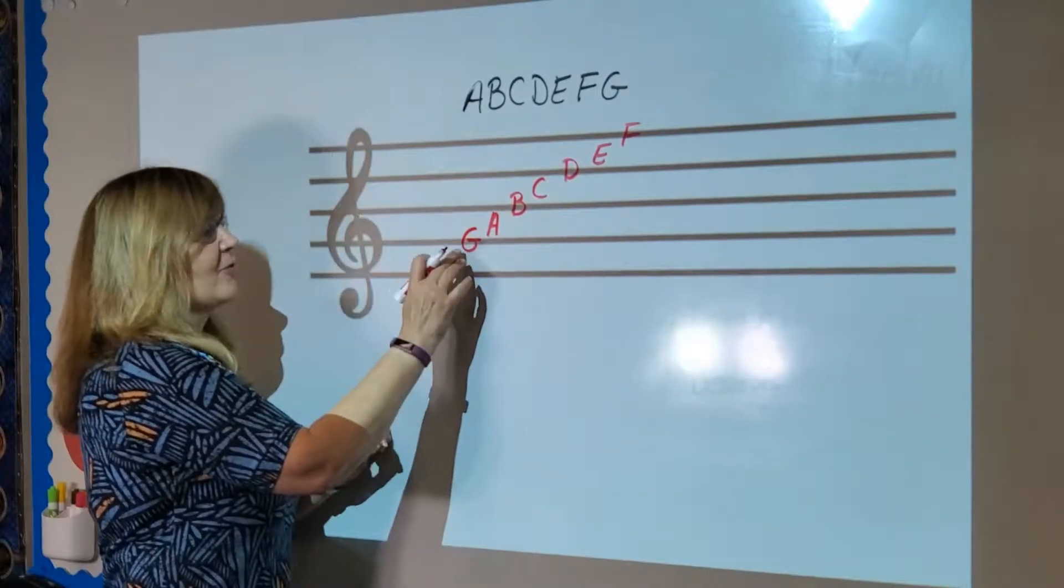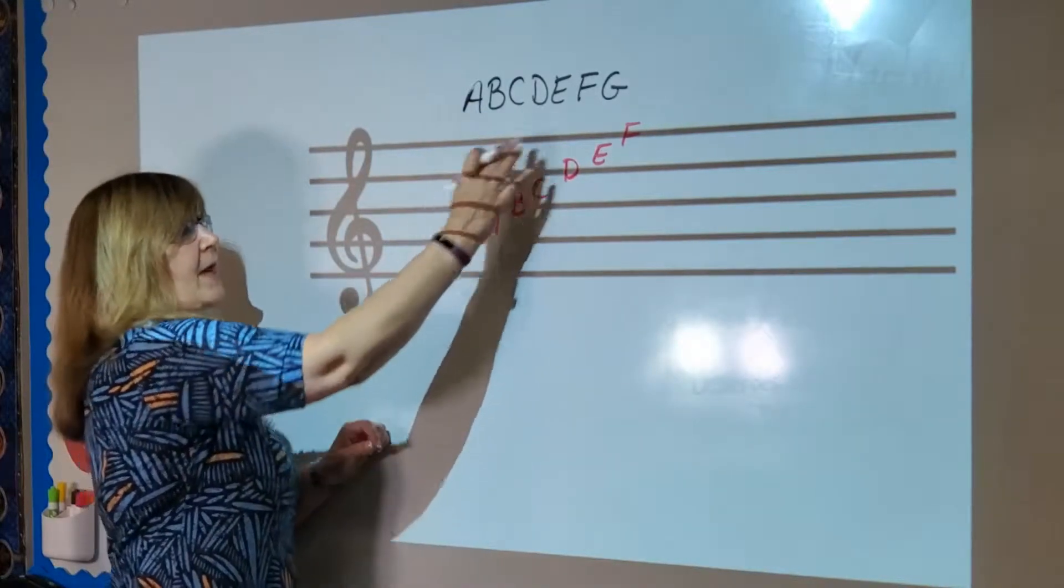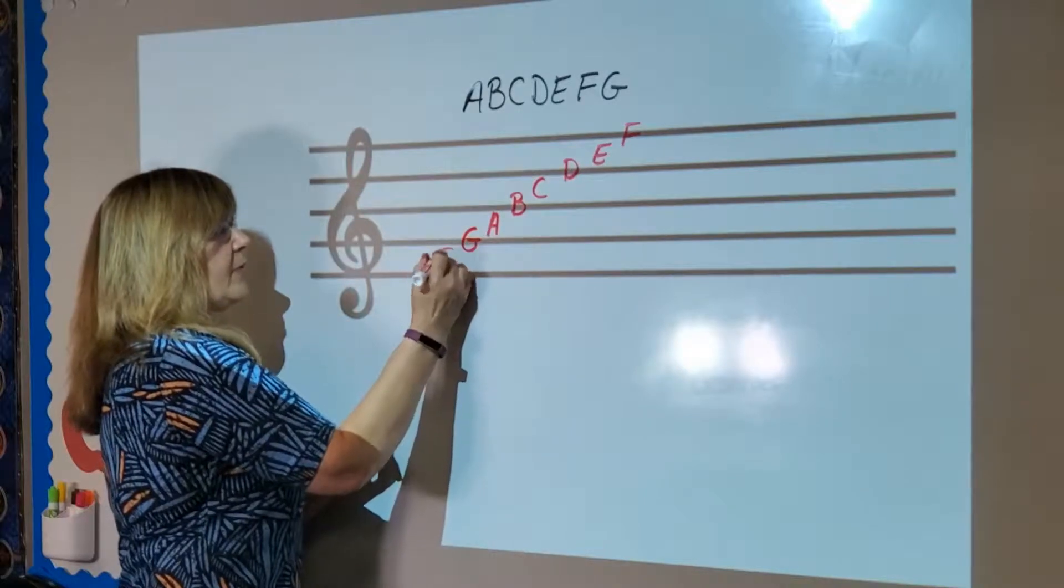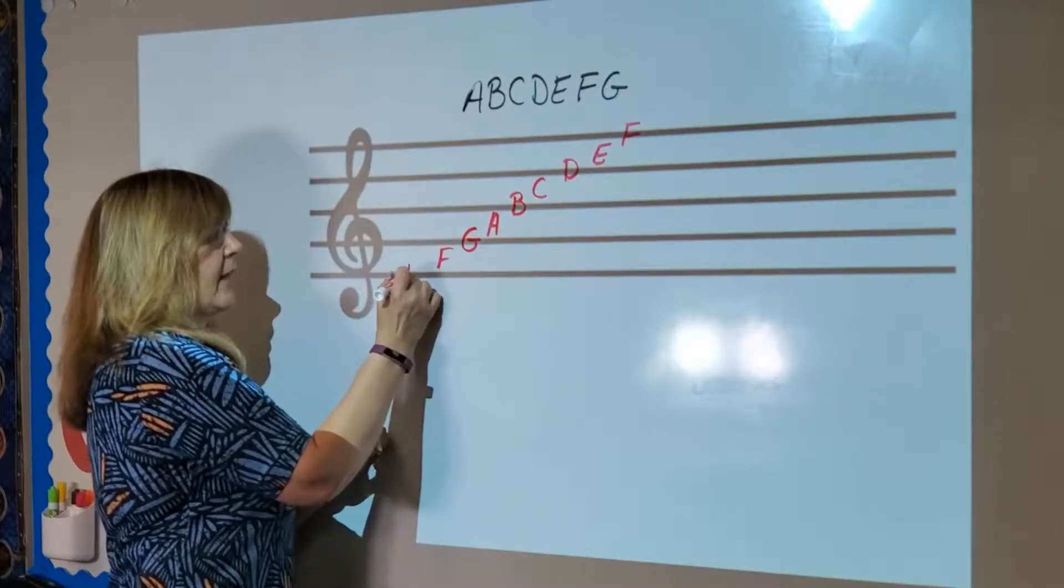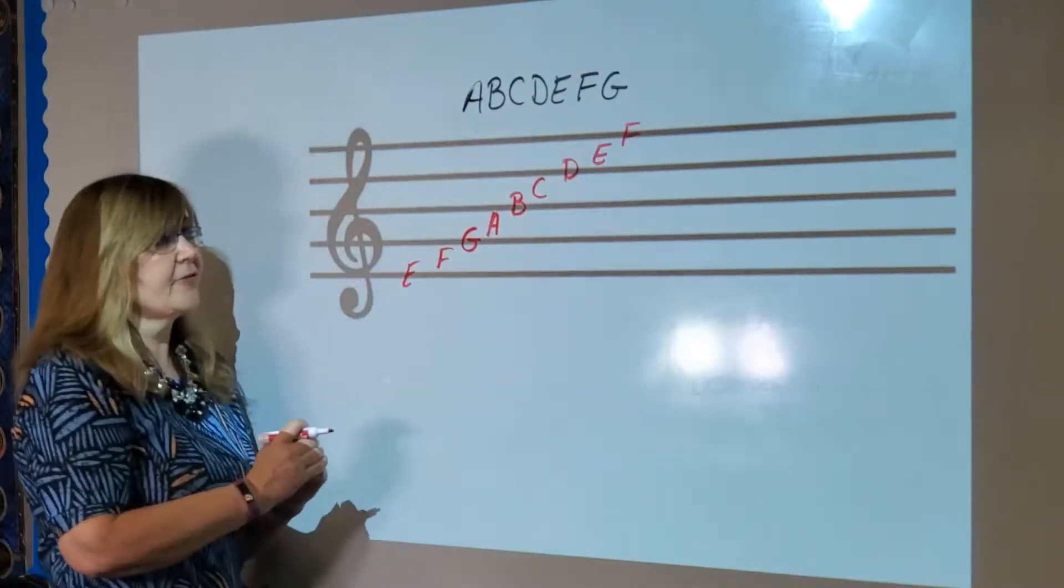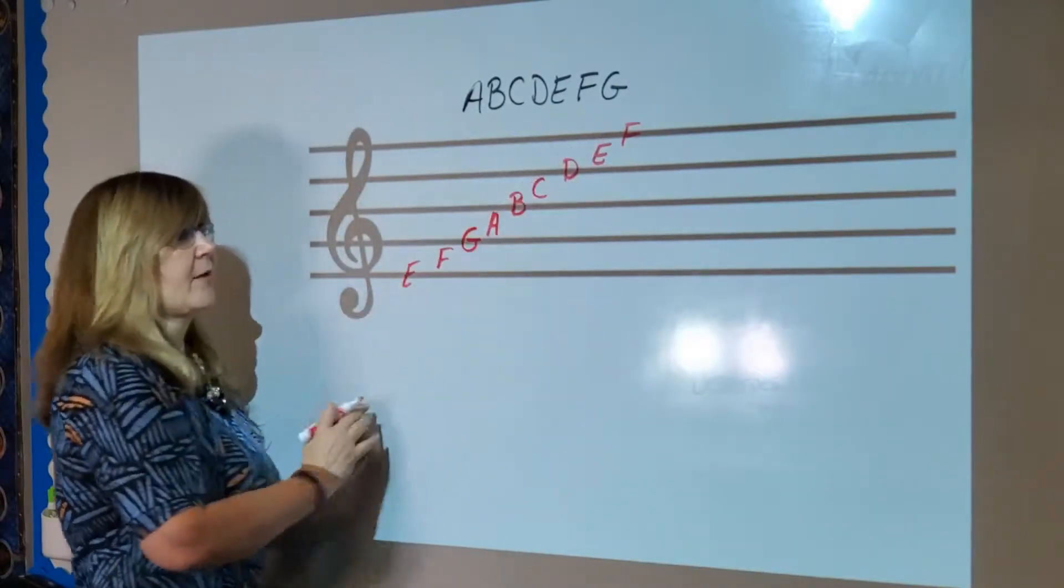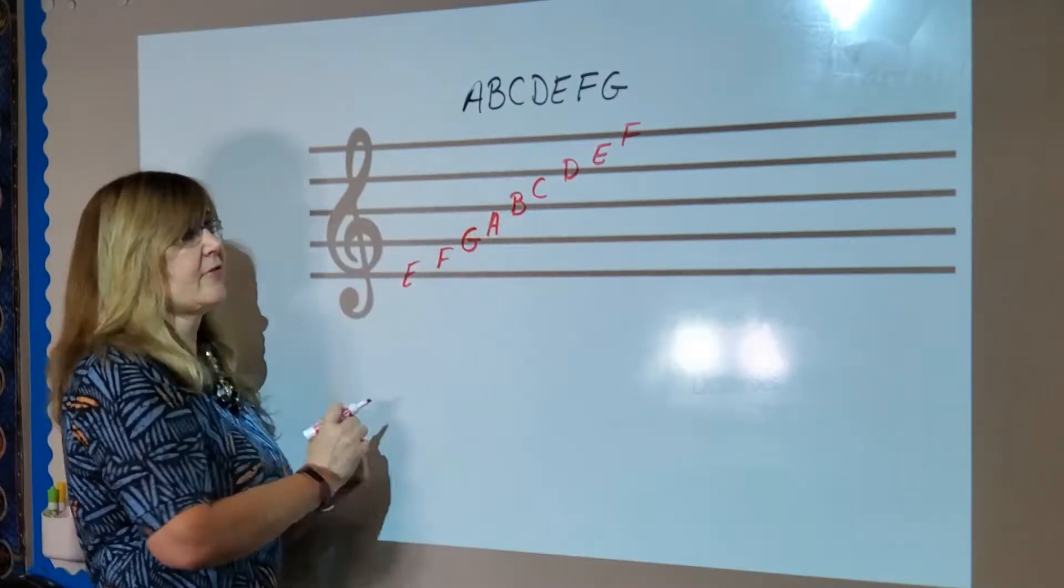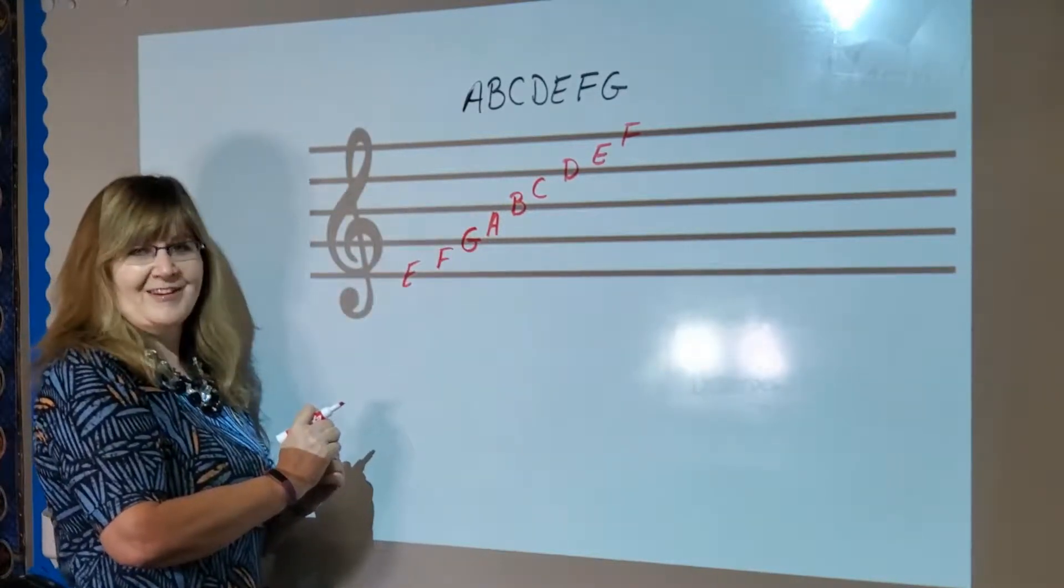So backwards we have the G, so going back in the alphabet of course this space will be F and the bottom line will be E. So here we have from low E up to a high F but that's kind of hard to memorize. You don't want to be counting every single letter trying to figure out a note.